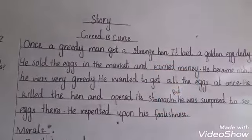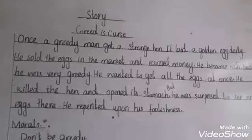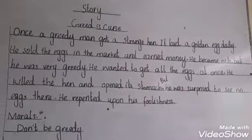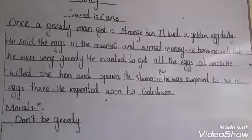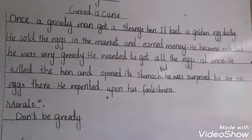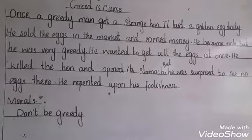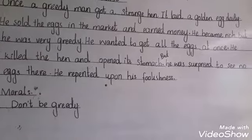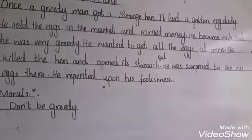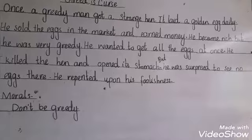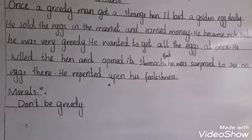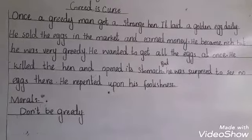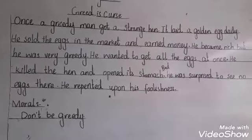Grade 4. This is the story: Greedy. Once a greedy man got a hen that laid a golden egg daily. He sold the eggs in the market and earned money. He became rich but he was very greedy. He wanted to get all the eggs at once. He killed the hen and opened its stomach but was surprised to see no eggs there. He repented upon his foolishness. Moral: don't be greedy. So let's note this story and learn.